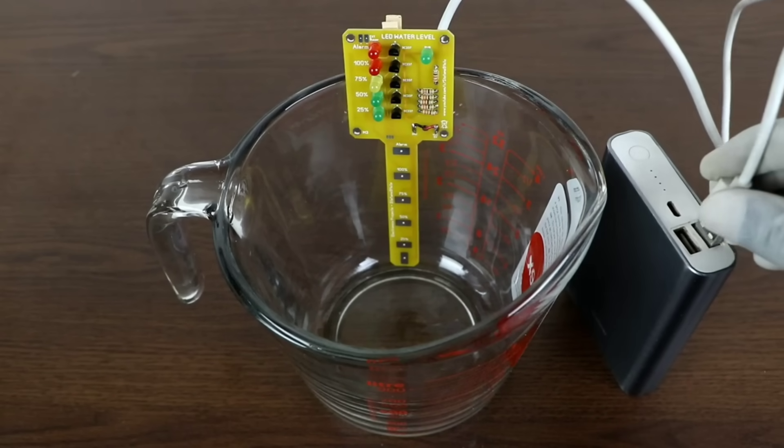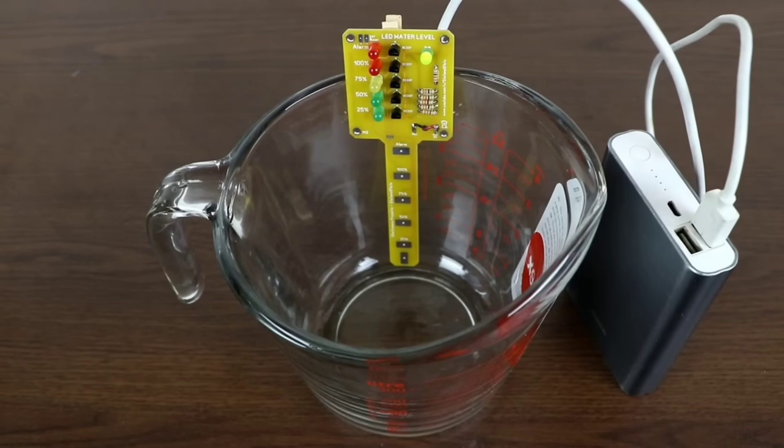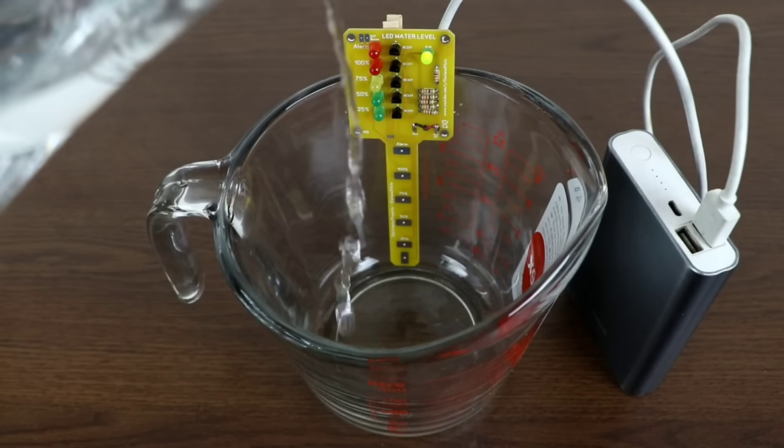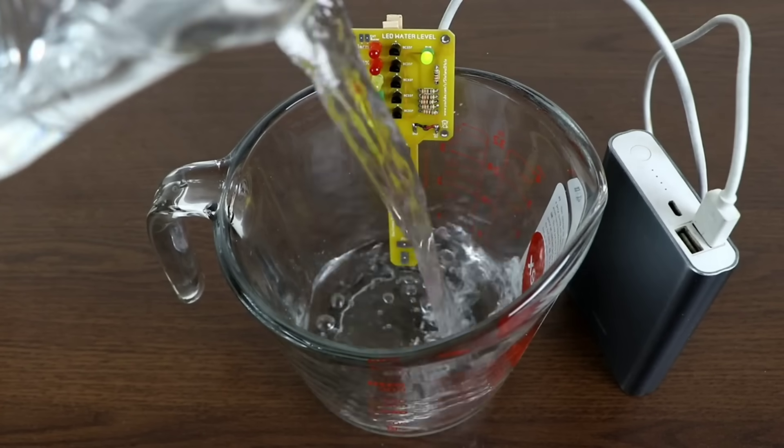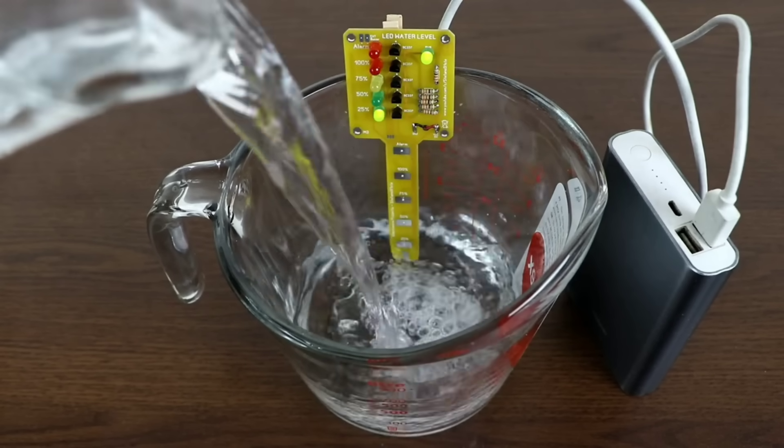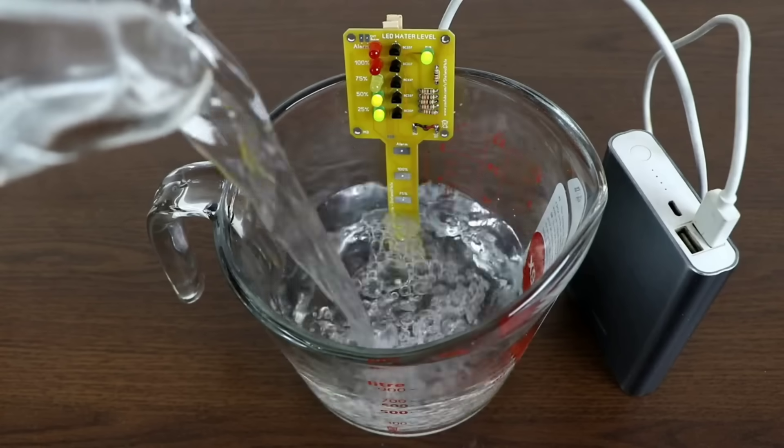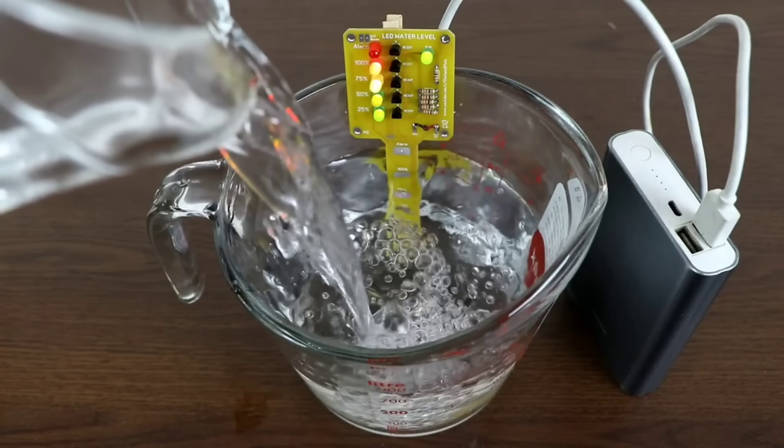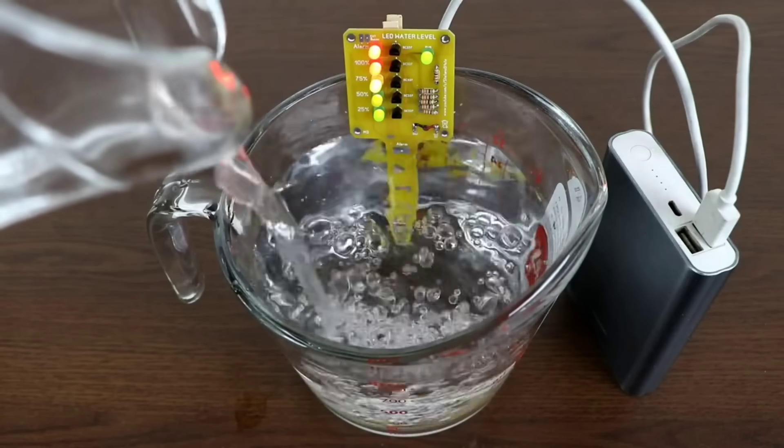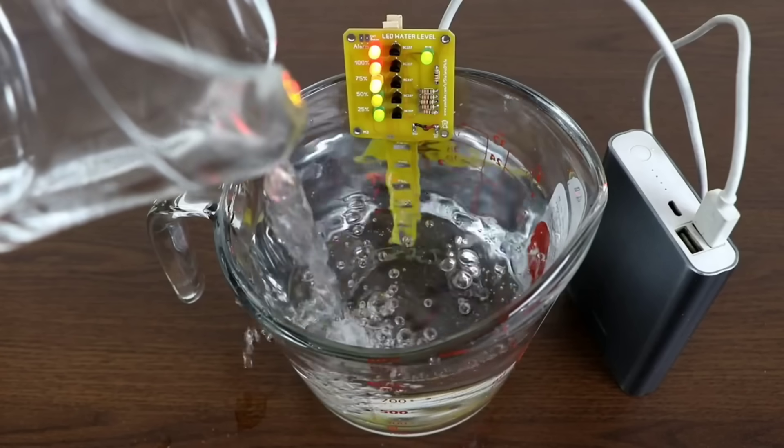For the testing process, we're using a simple power bank. Let's connect it to our PCB, and now the circuit is fully active. As soon as I start pouring water into the water jar, notice what happens. The moment the water touches the first sensor point, the indicator light immediately turns on. The response is quick, accurate, and truly helpful for preventing water wastage.